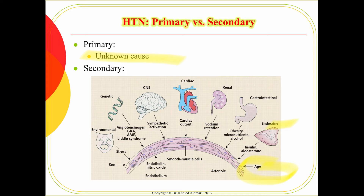Obesity, especially when associated with high lipids, will cause atherosclerosis, again affecting the endothelium. If there's a kidney problem with no good balance of water excretion and sodium retention, that will increase venous return and the workload of the heart, leading to high blood pressure. Problems within the heart, especially after MI, can also contribute. Overstimulation of the central nervous system can affect vasodilation and vasoconstriction, increasing systemic vascular resistance and blood pressure. This problem can also be secondary to family history, environmental and emotional stress, and gender can make a big difference as well.